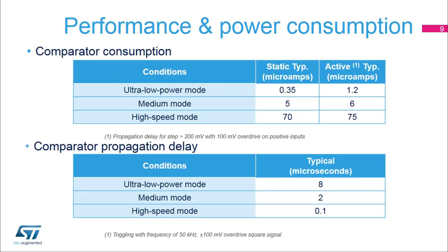The on-chip comparator configuration capability allows the user to select the best performance point for the targeted application. It replaces the external stand-alone comparator, thereby reducing the bill of materials.